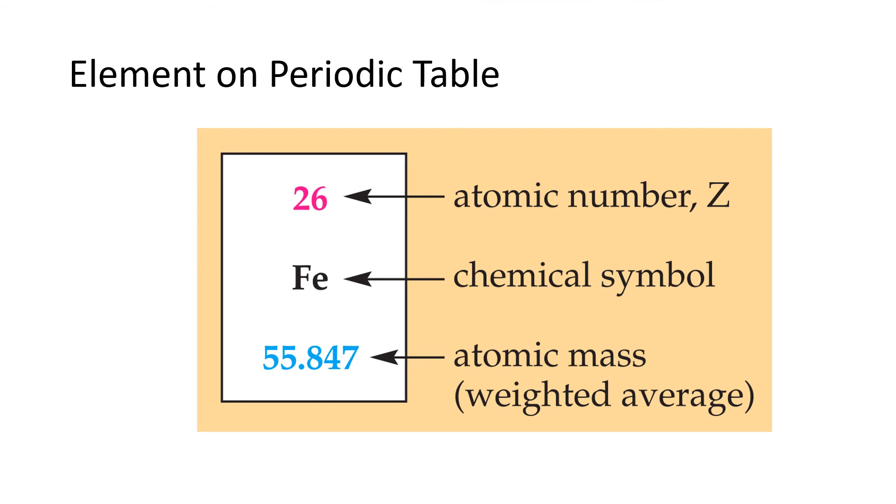If you look at an element on a periodic table, the information shown on this slide is what you typically will see. The name or the symbol for the element will be given, Fe in this case, or iron.